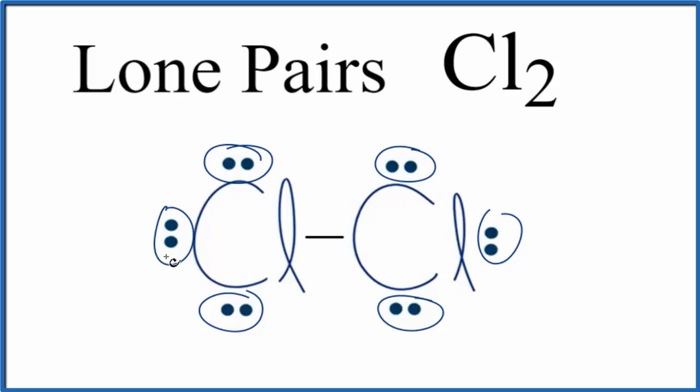Either way, we have a total of six lone pairs and then one bonding pair for the Cl2 Lewis structure. This is Dr. B, thanks for watching.